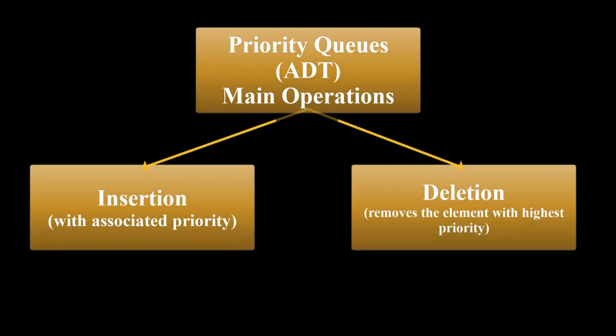Priority queue is an abstract data type that supports two main operations: insertion of elements with priority and removal of the elements with the highest or lowest priority. Priority queues do not enforce any particular internal organization or structure for the elements. The highest priority element is removed first.